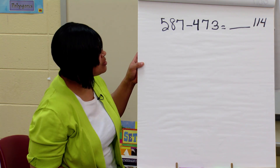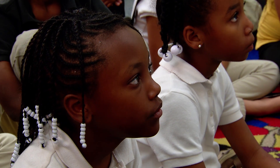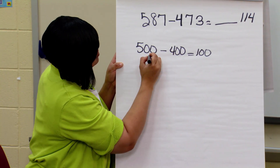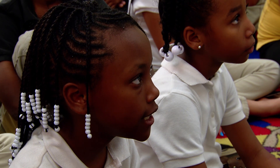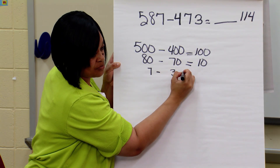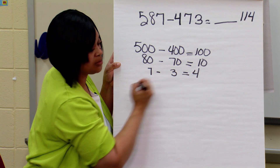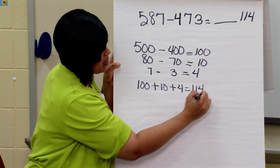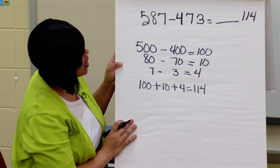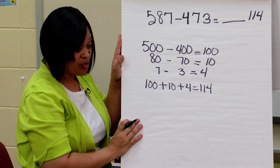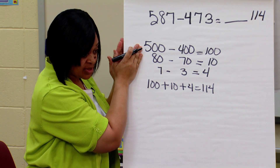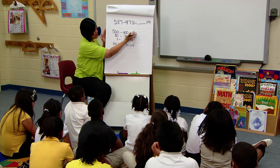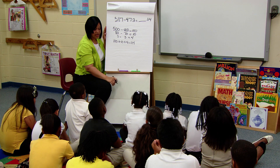Jada, can you defend your answer? 500 minus 400 equals 100. 80 minus 70 equals 10. 7 minus 3 equals 4. 100 plus 10 plus 4 equals 114. Excellent. Good job. So Jada, you decided to do it the expanded form way — subtracting your hundreds, then your tens and ones, then adding all of your answers together. That was very good.